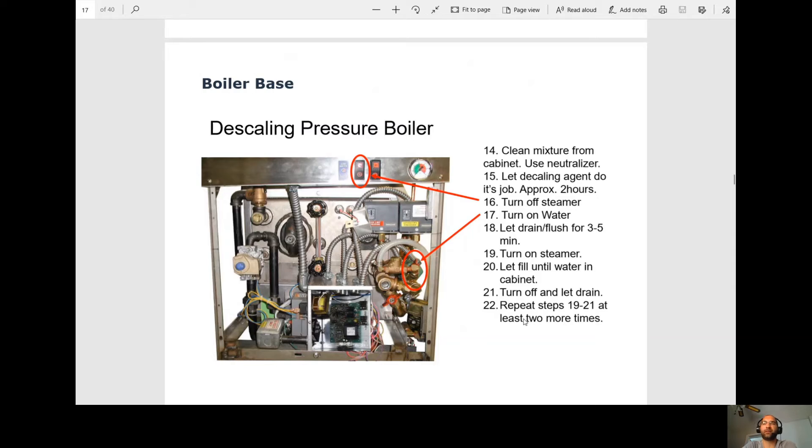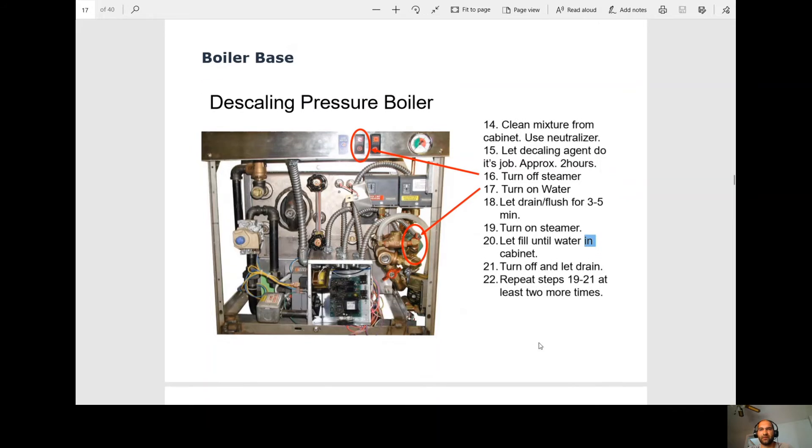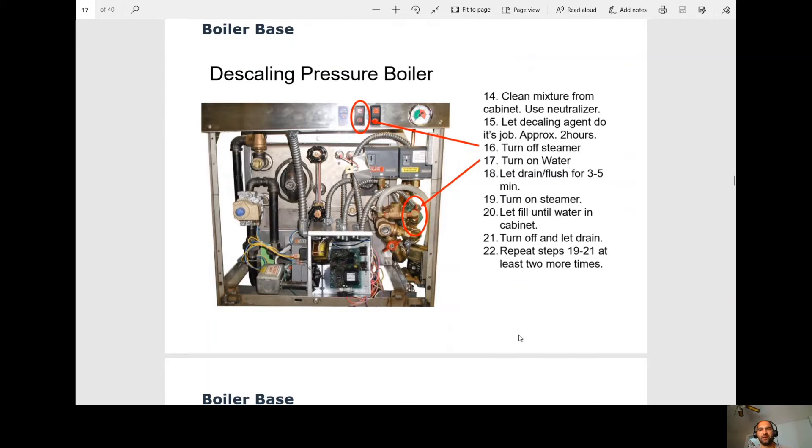So once it gets in that top cabinet, you want to clean that top cabinet. Use a neutralizer. Clean it out. That stuff is pretty corrosive. At that point, you want to let the descaler sit for about two hours. Once that's done, you're going to turn off the steamer and you're going to turn on the water. This is going to put us into another blow down. It's going to go for about three to five minutes. Then you're going to turn on the steamer. Let it fill again until the water goes into the top cabinet. And then you're going to turn it off and let it drain. You're going to do this two more times.